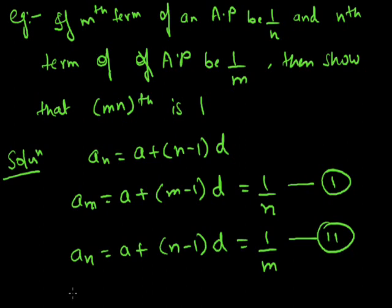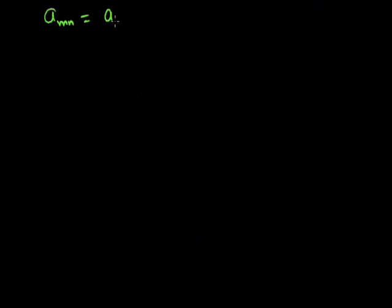Now we have to solve these two equations to find the values of a and d, because we have to prove that the mnth term equals 1. The mnth term of an AP is a_mn = a + (mn-1)d, so we need to find a and d and substitute into this equation.